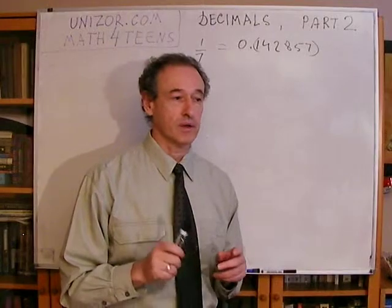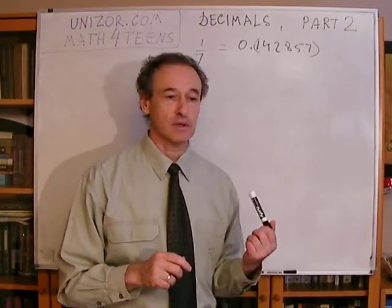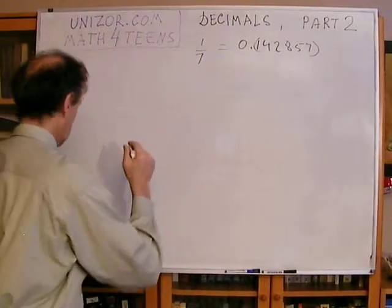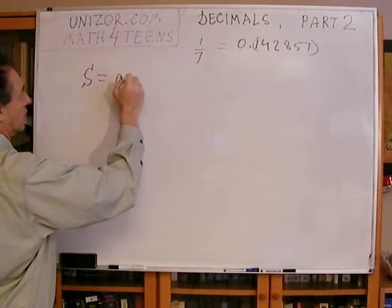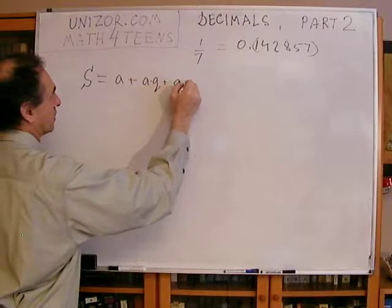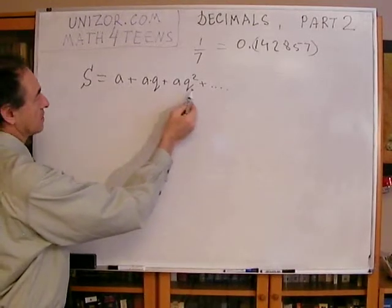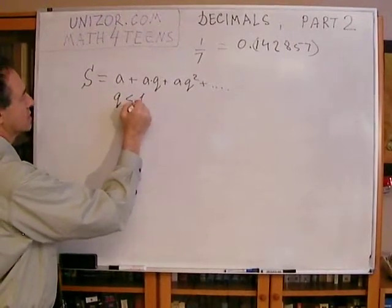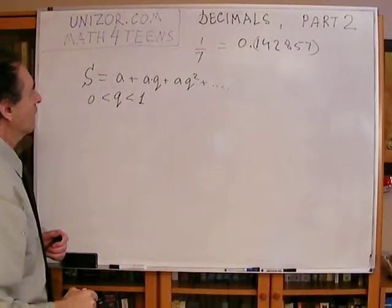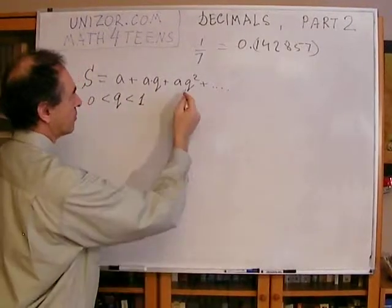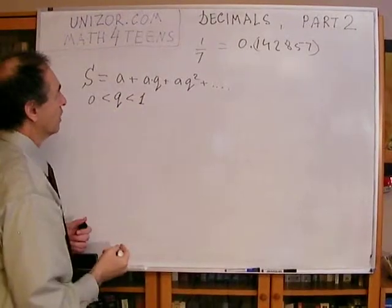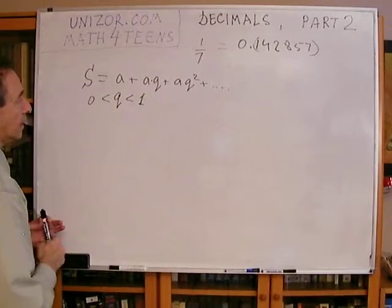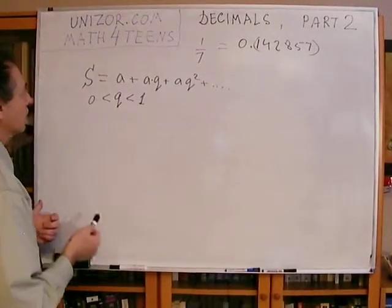Number two: I would like to remind one very important piece of the previous lecture, where I was talking about infinite geometrical progression. I will do it slightly more generally than in that lecture. If I have a sum of this type of members, every next member of this progression is the previous multiplied by Q. This is called a geometrical progression, and if Q is less than one — let's talk about positive numbers only — then obviously it's decreasing: every member is smaller than the previous by a factor of Q. The sum of this infinite geometrical progression can be calculated very easily, as I did in the previous lecture in a slightly less general case.